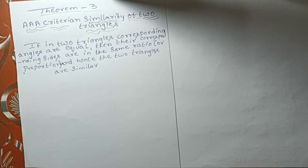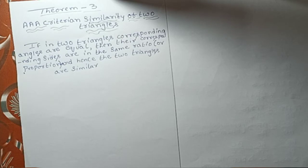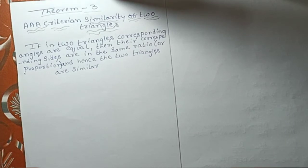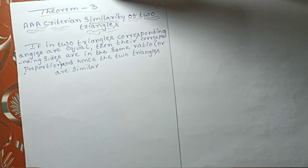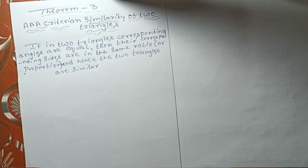Namaste, welcome to Veda Education Tutorials. Today we will look at the Triangles chapter, Theorem 3 — the AAA criterion for similarity of two triangles. If in two triangles the corresponding angles are equal, then their corresponding sides are in the same ratio or proportion, and hence the two triangles are similar.